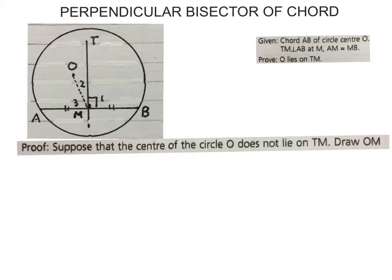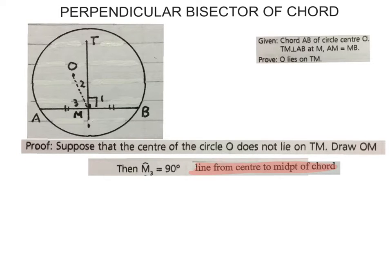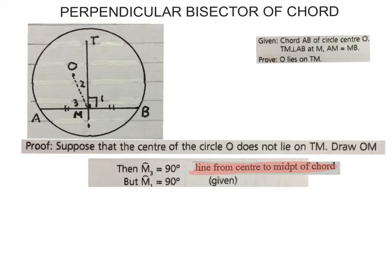What you do is place O anywhere but not on the line, and draw a dotted line down to M. Therefore, angle M3 will be 90 degrees — that angle over there — from the line drawn from the center to the midpoint of the chord. Since AM equals MB, we get that perpendicular, so this line has to be perpendicular.